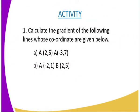We have come to the end of today's lesson, and I am going to give you the following work as assignment. The first question: calculate the gradient of the following lines whose coordinates are given below. Question A: coordinate A (2,5) and coordinate B (there is an error there, you should correct it) which reads (-3,7). The second question: look for the gradient of coordinate A (-1,1) and coordinate B (2,5).